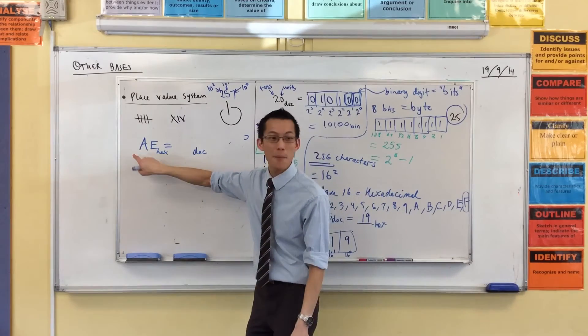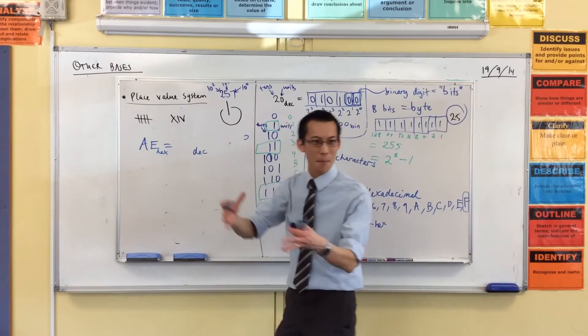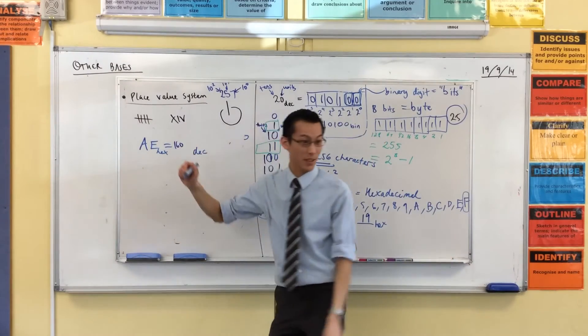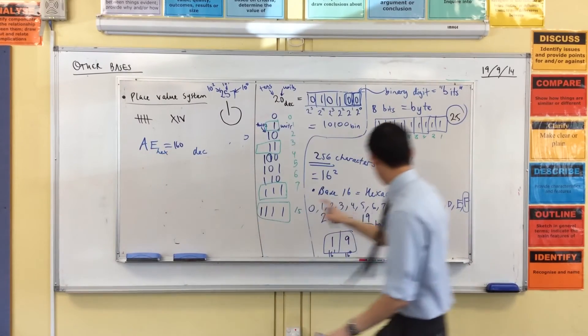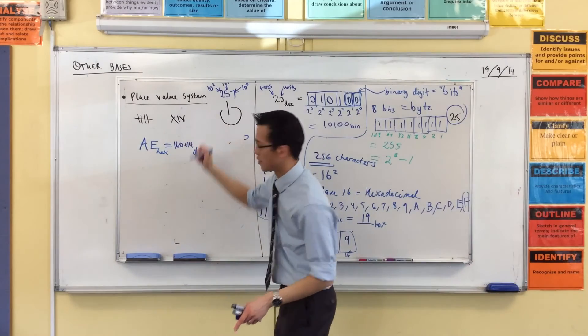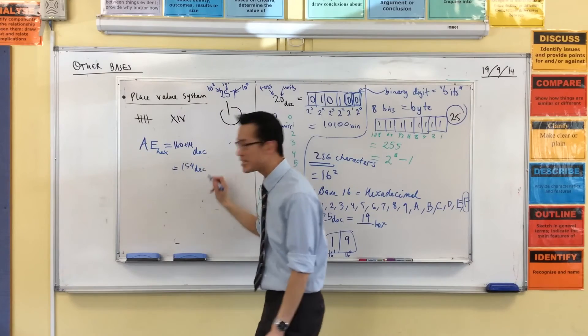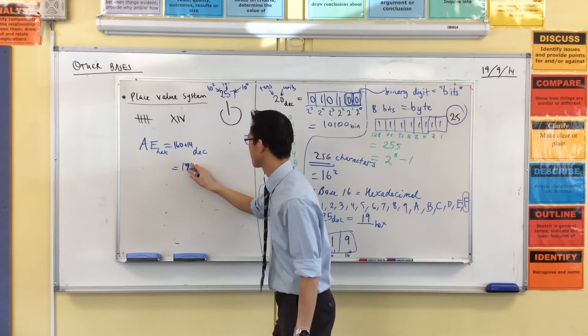And that's how many 16s you have, right? So that means it's the number A, the number 10 lots of 16, so that's 160, right? And then what's this? This is 14, it's how many units I have. So it'll be 160 plus 14, so it'll be 174 in decimal. Say it again. Oh, 74, sorry.